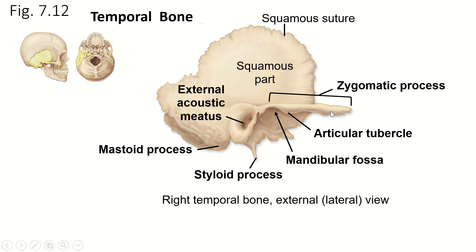Now the temporal bone by itself looks a little bit wackadoodle. It doesn't really look that wackadoodle as part of the skull but when you disarticulate it from the skull it looks a little wackadoodle. It has a zygomatic process — we already talked about that — which goes to the zygomatic bone. That's this long thin process that sticks out, and the zygomatic process makes part of your cheekbone. This flat part of the bone is called the squamous part — that's sort of the biggest part of the bone.